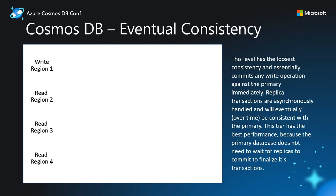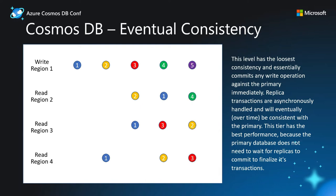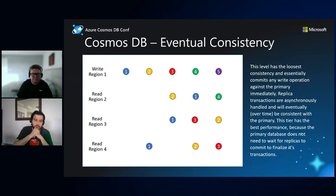The loosest consistency is Eventual consistency, where writes can be read out of order across different regions. If you write in one region and read in another, you can get different data — for example, region four might have the first write while region two reads the second write first. This delivers the highest performance since you don't wait for replication, but it can lead to inconsistency and must be carefully considered.